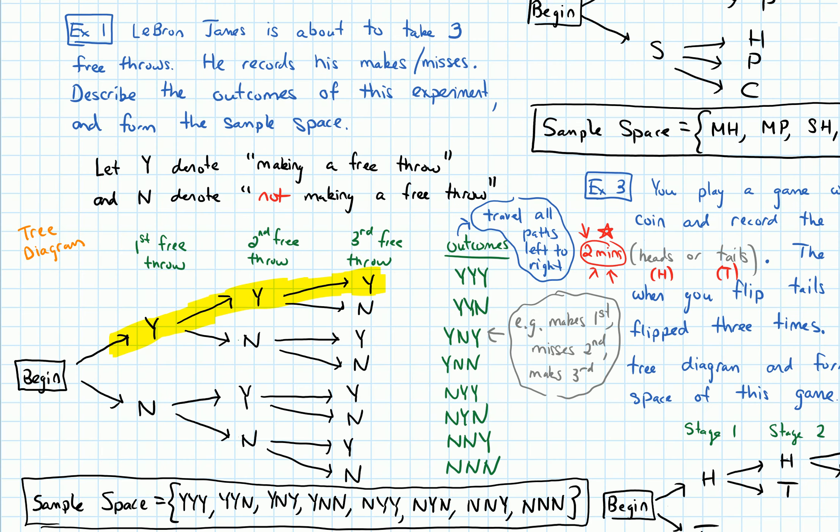So example one was this question involving LeBron James taking three free throws, and we drew this tree diagram to describe the outcomes of the experiment and then write out the sample space. And we saw here that there were eight elements in this sample space, eight outcomes.